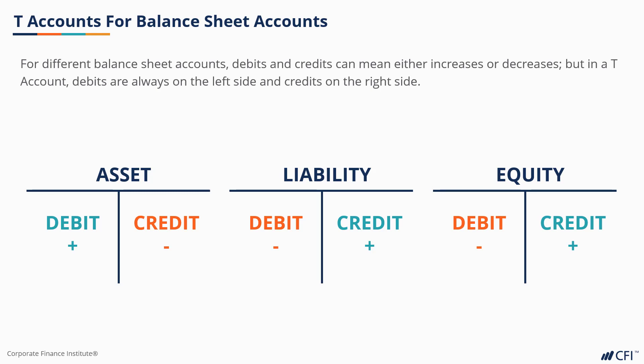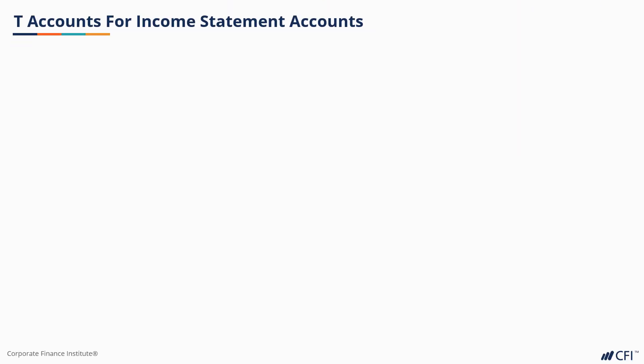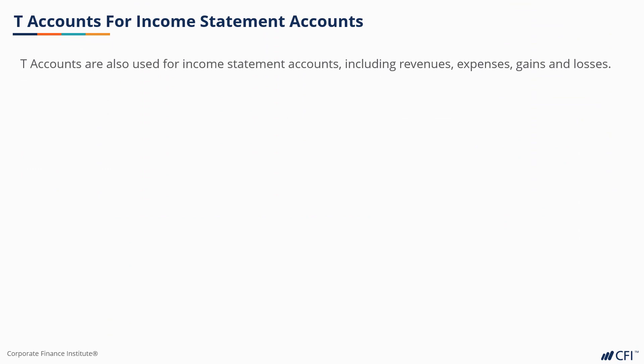If you think about the formula assets equals liabilities plus shareholders' equity, you can think about why these are the way they are. Now let's look at what they are on the income statement. The income statement has revenues, expenses, gains and losses.